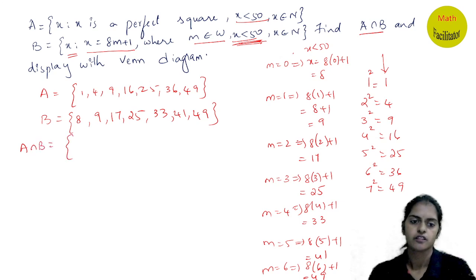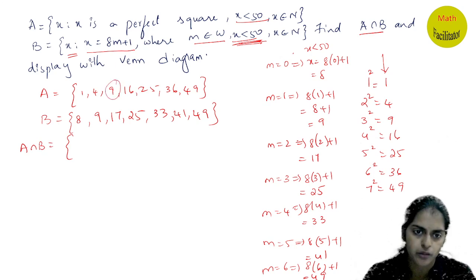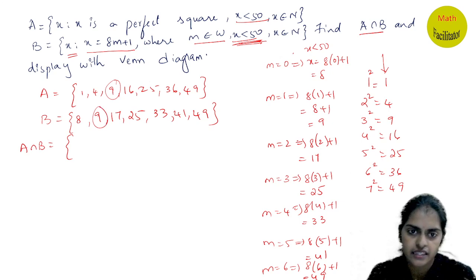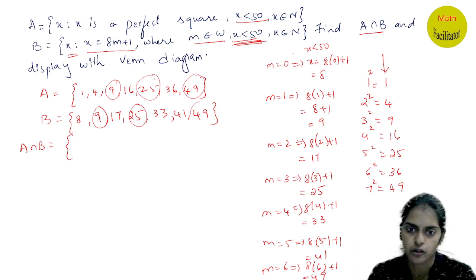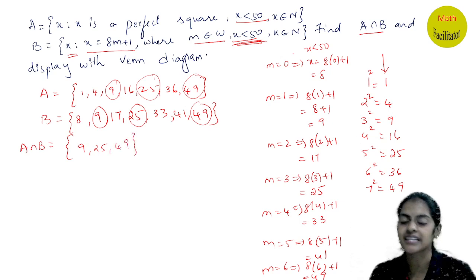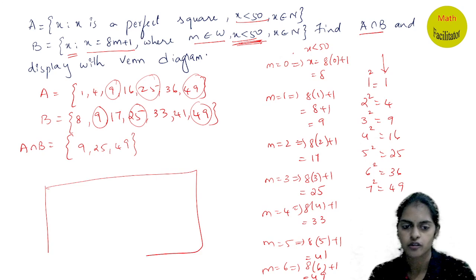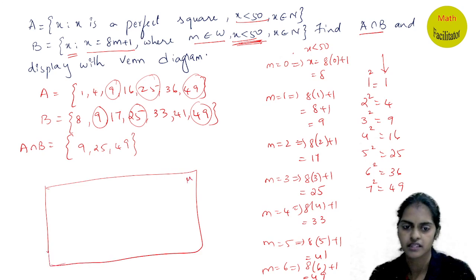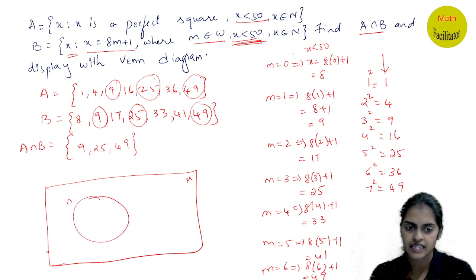Now A intersection B — common elements. 9 is common, 25 is common, 49 is common. So A ∩ B = {9, 25, 49}. For the Venn diagram, we draw a rectangular box for the universal set, then draw set A and set B circles.